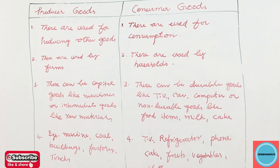Examples of producer goods: machines, coal, buildings, factory, trucks. Examples of consumer goods: TV, refrigerator, phone, mobile phone, cake, fruits, vegetables, clothes.